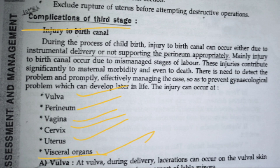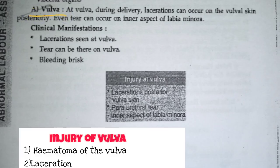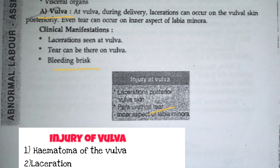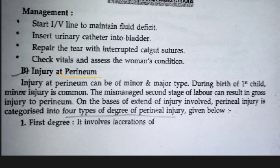First, vulva — that is the external reproductive system. There will be lots of tearing and bleeding. This is generally seen because of the use of forceps in delivery. If the baby is unable to come out and forceps are used, or if there are complications and delivery is really hard, tear in the external reproductive system will be seen. Injury of the vulva involves hematoma and laceration.